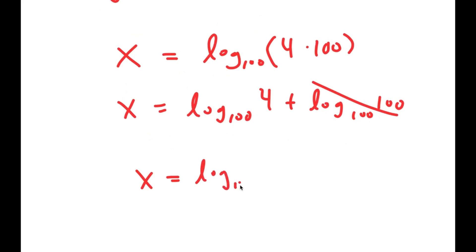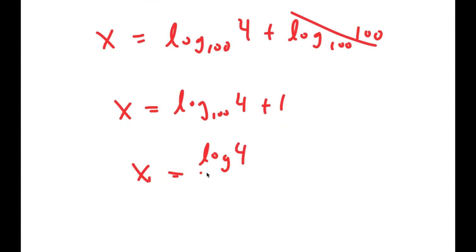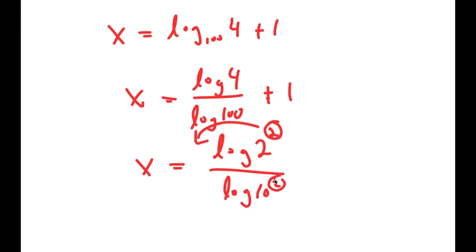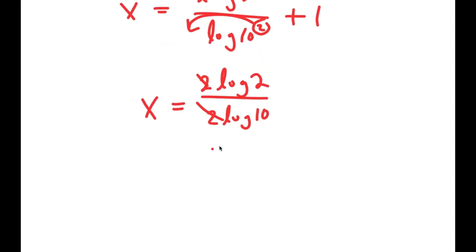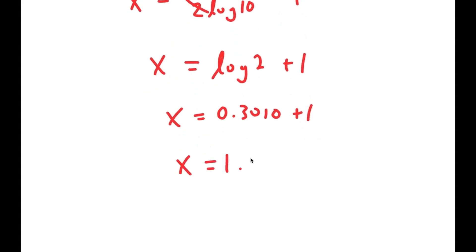So I get x is equal to log base 100 of 4 plus 1. Now, log base 100 of 4 is the same thing as log of 4 over log of 100. Log of 4 I can rewrite as log of 2 squared, and then I can move the 2 to the front. And log of 100 I can rewrite as log of 10 squared, and I can move the 2 to the front. So now I get 2 times log 2 over 2 times log 10, and these two 2s cancel out, and log of 10 is just 1. So I get log of 2 plus 1, which is equal to 0.3010 plus 1, which is equal to 1.3010.